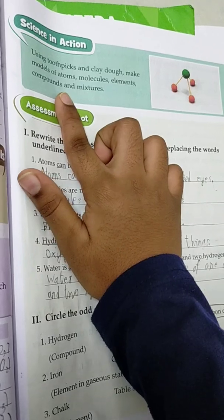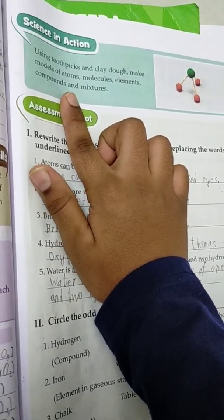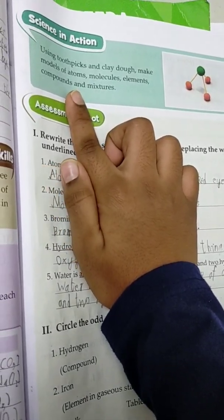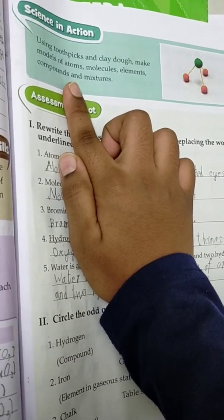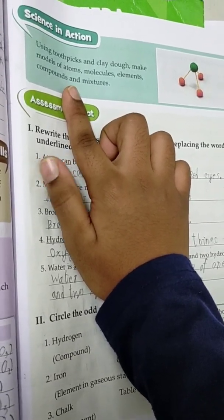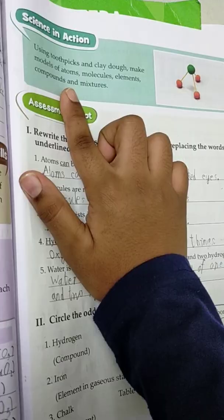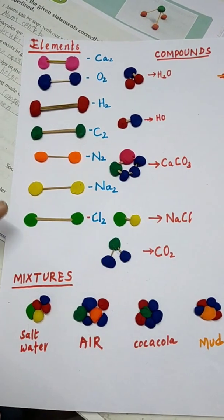Hi, today I have done my science activity. Let's see the activity. This is the activity science in action. Using toothpicks and clay, we should make some examples of elements, compounds, and mixtures. So this is the activity I have done.